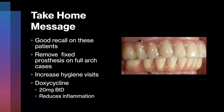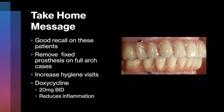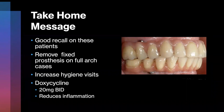My take-home message with diabetic patients: good recall. On full arch cases, I'd take off the prosthesis within the first year to check hygiene and soft tissue, and make sure there's no peri-implantitis. I'd increase hygiene visit frequency. It has been shown that low-dose doxycycline — 20 milligrams BID — reduces soft tissue inflammation around implants. Many patients are on this course of doxycycline for three to six months, cycling on and off. Overall, diabetes and implants have a very high success rate.